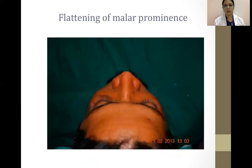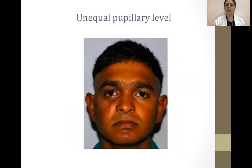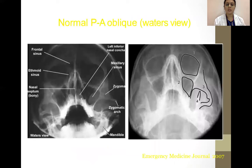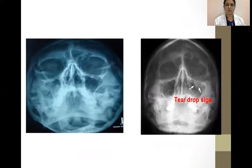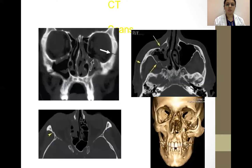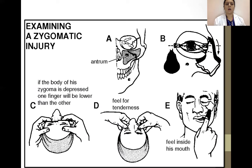Extra-ocular movements, flattening of malar prominence, and unequal pupillary level should be noted. Periorbital examination reveals edema, circumorbital ecchymosis, subconjunctival hemorrhage, orbital emphysema, lacerations, ptosis, canalicular injury, and canthal tendon displacement. Radiographic examination: the posterior-anterior oblique (Water's view) is an excellent assessment of sinuses and the wall of the zygoma and its processes. A teardrop sign can usually be seen in case of a fracture. Submental vertex radiograph and CT scans are also used.